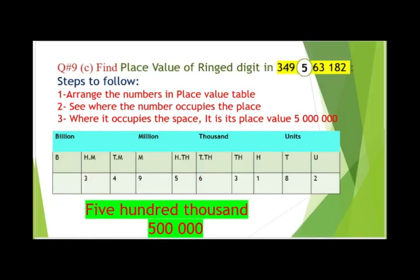Now we will solve question number nine, part C: find the place value of the ringed digit in 349,563,182. Again, we will follow the steps — arrange the numbers in the place value table, see where the number occupies the place, and that is the place value of it.